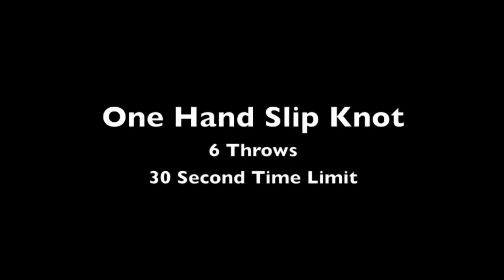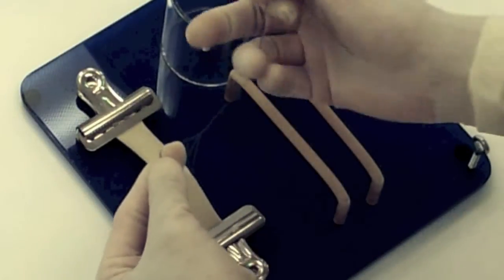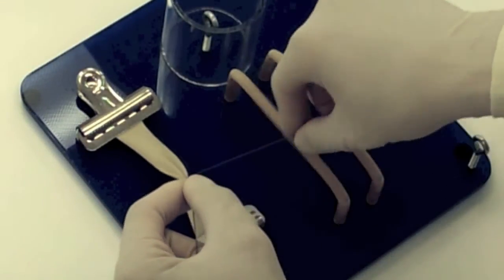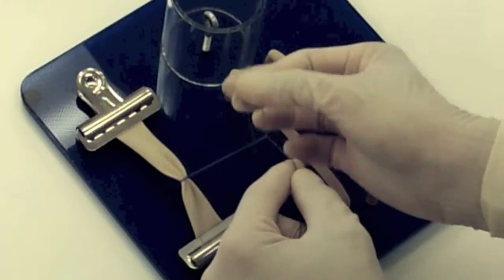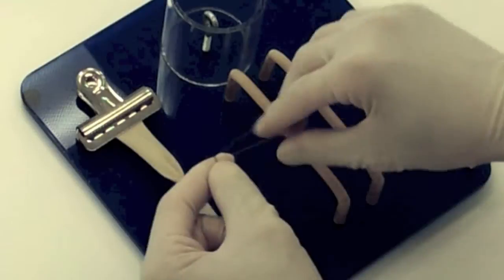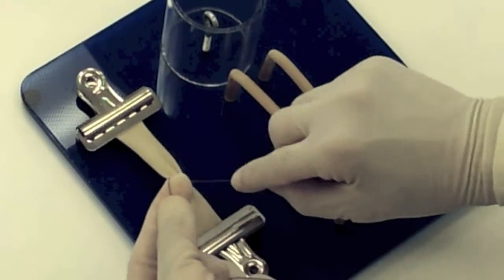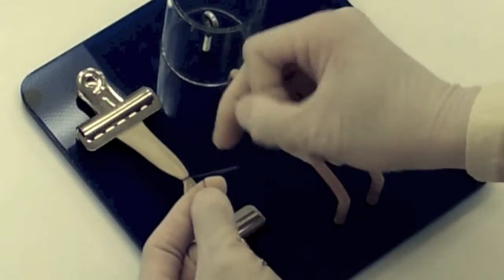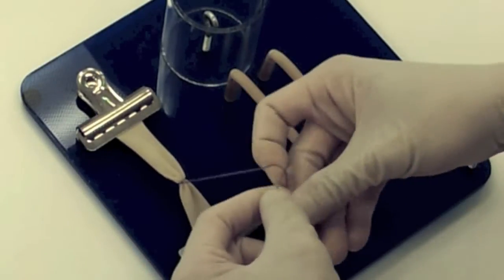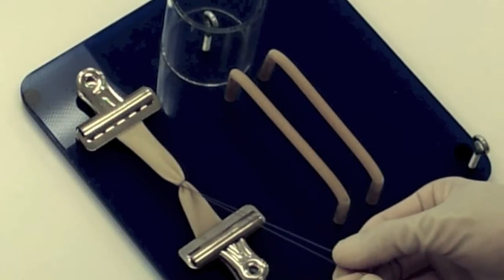One-hand slip knot, time limit 30 seconds. You need to tie six throws, and compare this to the prior video in which square knots were tied, where both hands move in space. In this case, the hand holding the post's end of the suture remains relatively stable in space. This allows for light, steady tension without excessive pulling on the threads. This is the same for a two-hand technique slip knot as well.